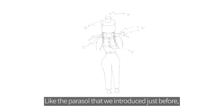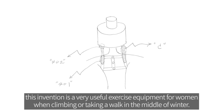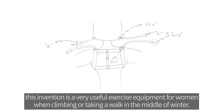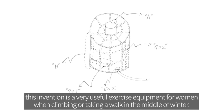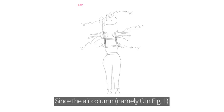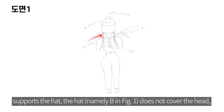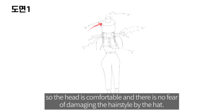Like the parasol that we introduced just before, this invention is a very useful exercise equipment for women when climbing or taking a walk in the middle of winter. Since the air column, namely C in Figure 1, supports the hat, the hat, namely B in Figure 1, does not cover the head, so the head is comfortable and there is no fear of damaging the hairstyle by the hat.